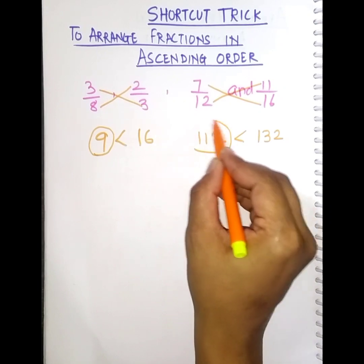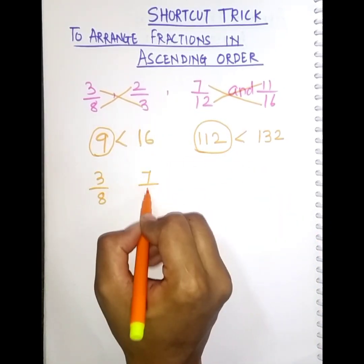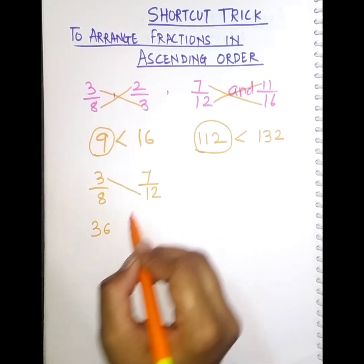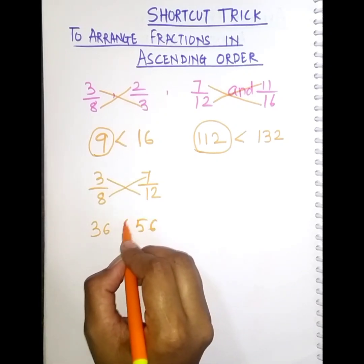So we'll compare the two smaller fractions again to see which one is smaller out of both. So 3 by 8 and 7 by 12. So 3 into 12 is 36 and 7 into 8 is 56. So obviously the 36 is smaller.